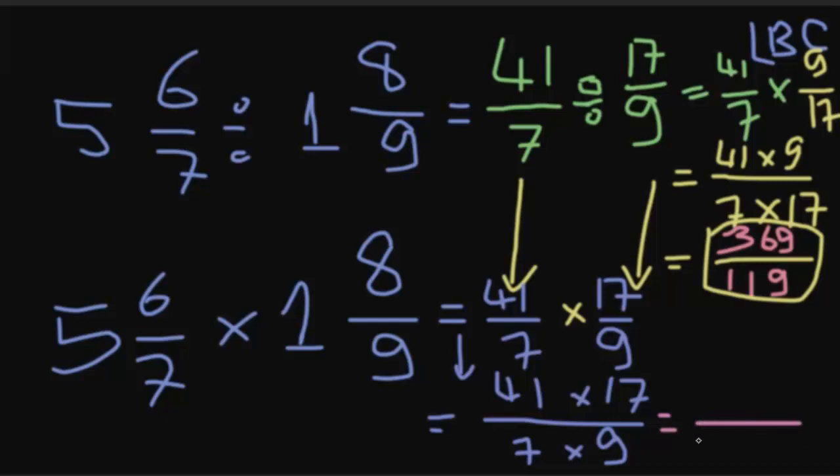So equals 41 times 17 equals 697, over 7 times 9 equals 63. Yes, 63.